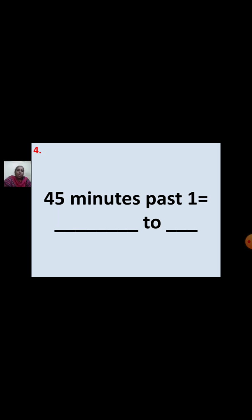Fourth question: Forty-five minutes past 1 equal to dash to dash. After 1 o'clock, 45 minutes are past. You can write this in another way: 45 minutes past 1 equals quarter to 2, because for 2 o'clock, still 15 minutes are left.